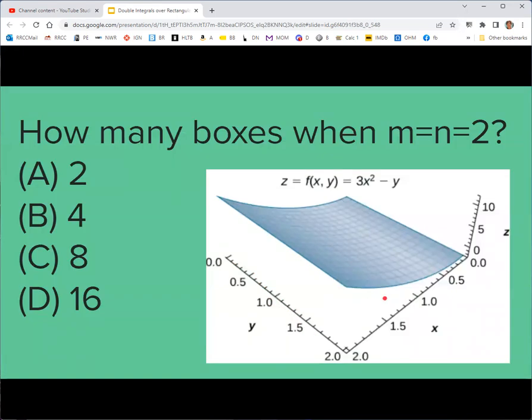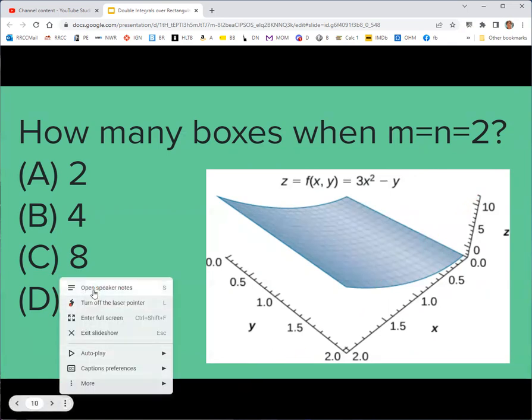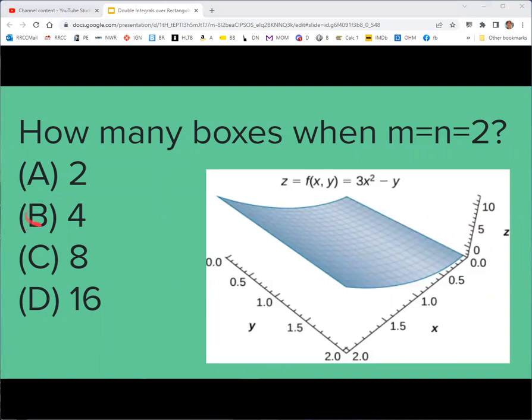If we were to have m and n equal to two, how many boxes would I have in my approximation? The correct answer is b4, because you would have this chopped up in half in both directions. So you'd have two in the x direction and two in the y direction, and so you'd get four boxes. And in general, the number of boxes should be m times n.